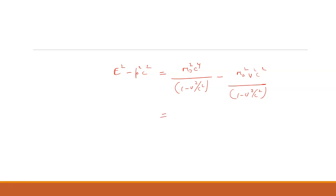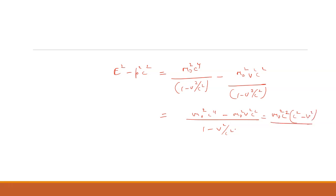The denominator 1 minus v²/c² is the same in both terms. In the numerator it is m₀ squared c⁴ minus m₀ squared v² c squared. Taking m₀ squared c squared as common gives c squared minus v squared. Dividing by 1 minus v²/c² — with (c² minus v²)/c² cancelling the denominator — everything simplifies.